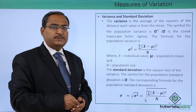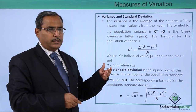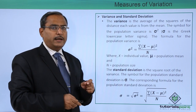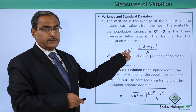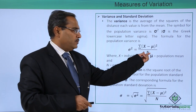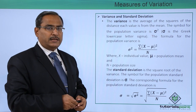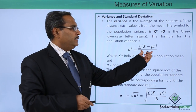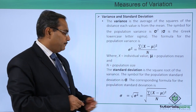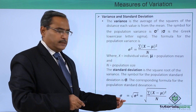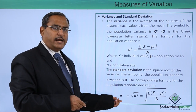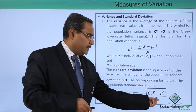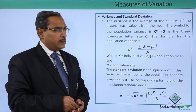In the case of a sample, the variance is denoted by s squared, and the denominator is small n minus 1, where small n is the sample size. Similarly, the sample standard deviation is denoted by small s, with small n minus 1 in place of capital N.